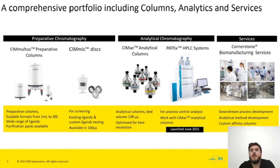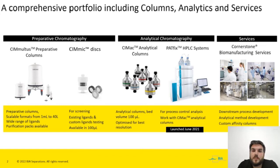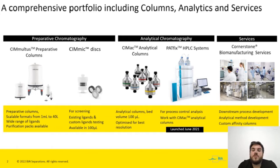Before I begin, I would like to present the BIA Separations product portfolio, which is comprised of three different categories: preparative devices, analytical devices, and process development services. The preparative products are used in the purification of target biomolecules and can be scaled up. The trade name for this product family is Simmultus, and they are available from 1 ml to 40 L volumes in a large range of chemistries.